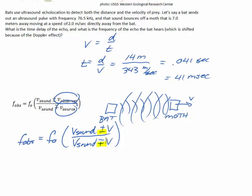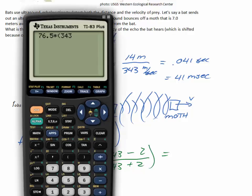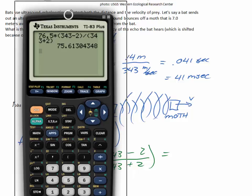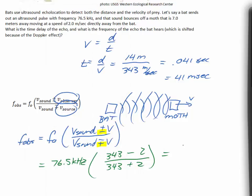and we're going to use the plus sign on the bottom of the fraction. So we're going to have 76.5 kilohertz times 343 meters per second minus 2 meters per second over 343 plus 2 meters per second. And we end up with 75.6 kilohertz.